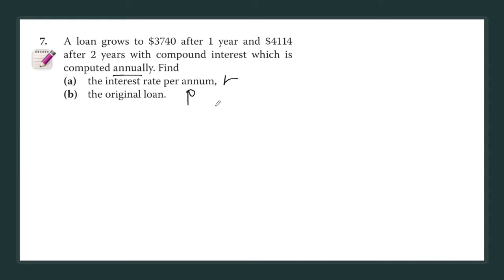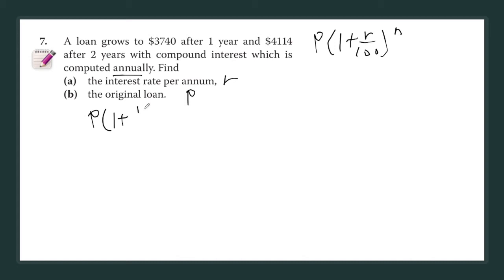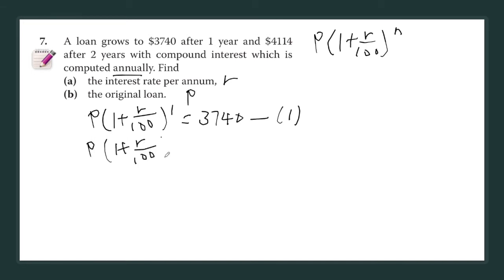They want you to find r and the original P — there are two unknowns here. Let's recap on the compound interest formula. After one year the loan becomes P times (1 + r/100)^1 = 3740 — call this equation one. After two years: P times (1 + r/100)^2 = 4114 — call this equation two. Two unknowns, two equations.